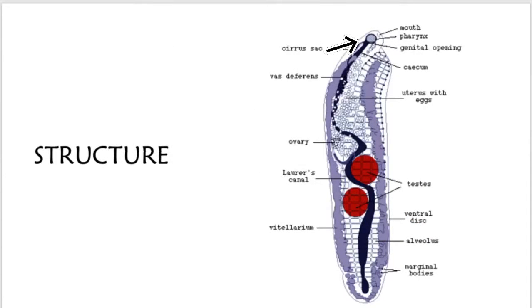Here you can see this is the anterior, the oral sucker. This is the posterior, the ventral sucker.